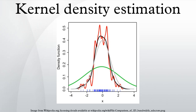The Epanechnikov kernel is optimal in a minimum variance sense, though the loss of efficiency is small for the kernels listed previously, and due to its convenient mathematical properties, the normal kernel is often used K(x) = φ(x), where φ is the standard normal density function.